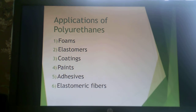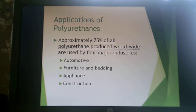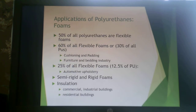Approximately 75% of all urethane produced worldwide is made by four major industries that use lots of foams: automotive, furniture and bedding, appliances, and construction. 50% of all polyurethanes are flexible foams, and 60% of all flexible foams — or 30% overall — are for cushioning and padding like in car seats, furniture, or bedding. 25% of all flexible foams go to automotive upholstery, and 60% to furniture.